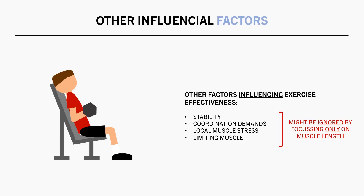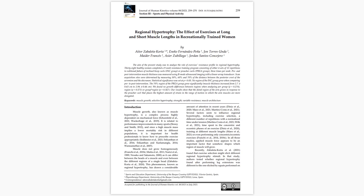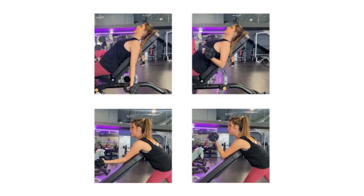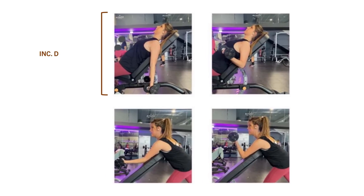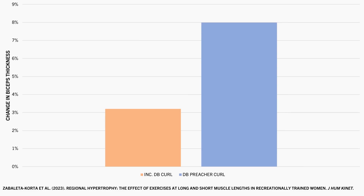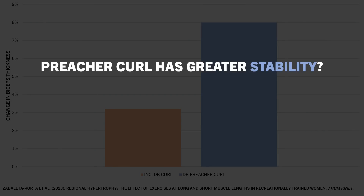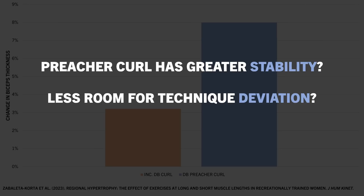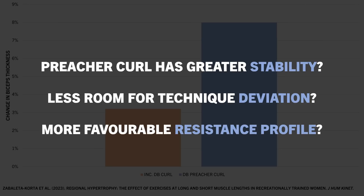For example, this study compared the effects of seated incline dumbbell curls versus preacher curls on biceps hypertrophy. 38 women with a minimum of 6 months lifting experience performed bicep curl training for 9 weeks — one group performed the seated incline dumbbell curl, which trains the biceps at a longer length, while the other group performed the dumbbell preacher curl, which trains the biceps at a shorter length. It was found that the preacher curl resulted in superior biceps growth, shown in blue, compared with the incline dumbbell curl, shown in orange, despite the incline dumbbell curl training the biceps at a longer length. These results might be due to several other factors: the preacher curl has greater stability, possibly allowing more tension on the biceps; technique may be forcibly stricter; or the preacher curl may have a more favorable resistance profile. These are all independent factors from muscle length that can also influence hypertrophy.